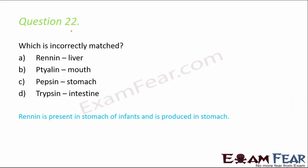Question number 22: which is incorrectly matched — renin/liver, tylin/mouth, pepsin/stomach, trypsin/intestine? The incorrect option is A because renin is present in the stomach of infants and is produced in the stomach, so its area of action is the stomach.